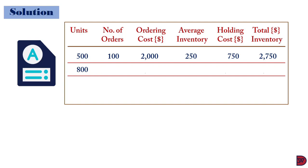When we come to ordering 800 units, the number of orders will be 62.5 — that is 50,000 divided by 800. Ordering cost will be 62.5 times $20, giving $1,250. Average inventory is 800 divided by 2, giving 400. Holding cost will be 400 times $3, giving $1,200. Total inventory will be $1,250 plus $1,200, giving $2,450.